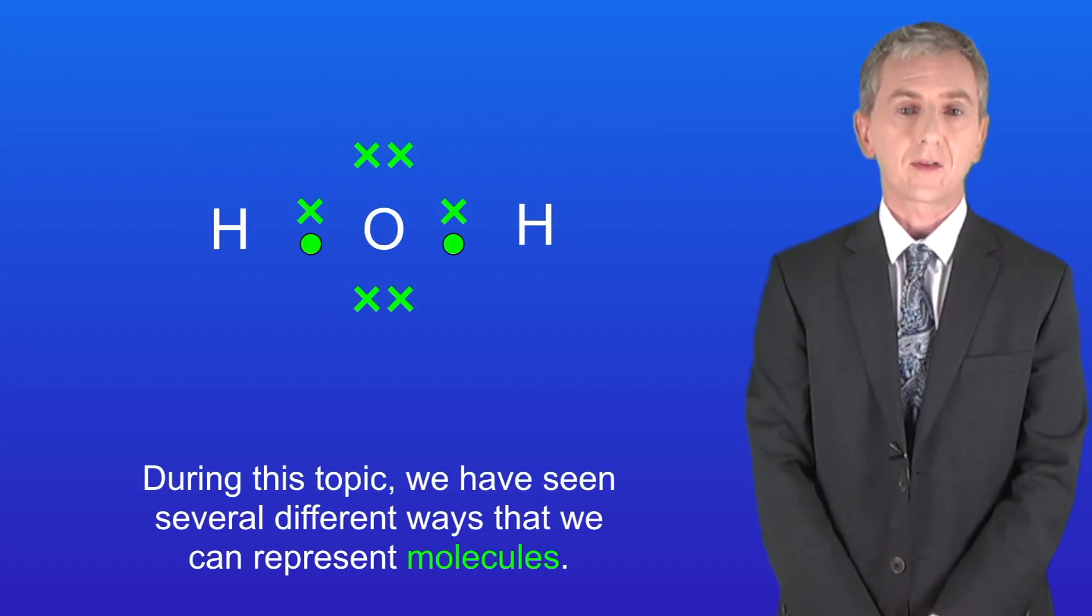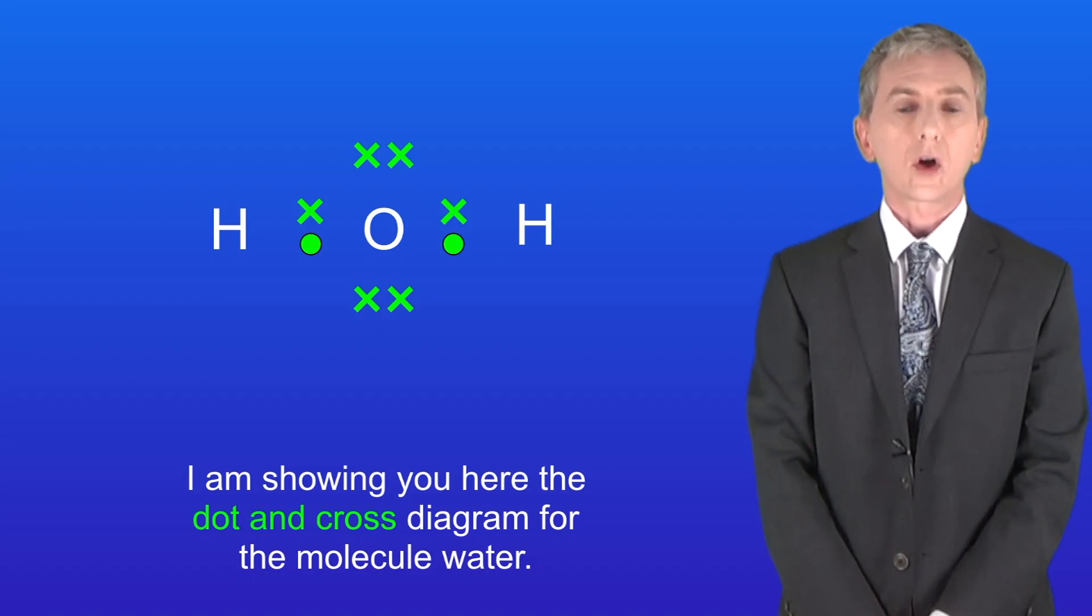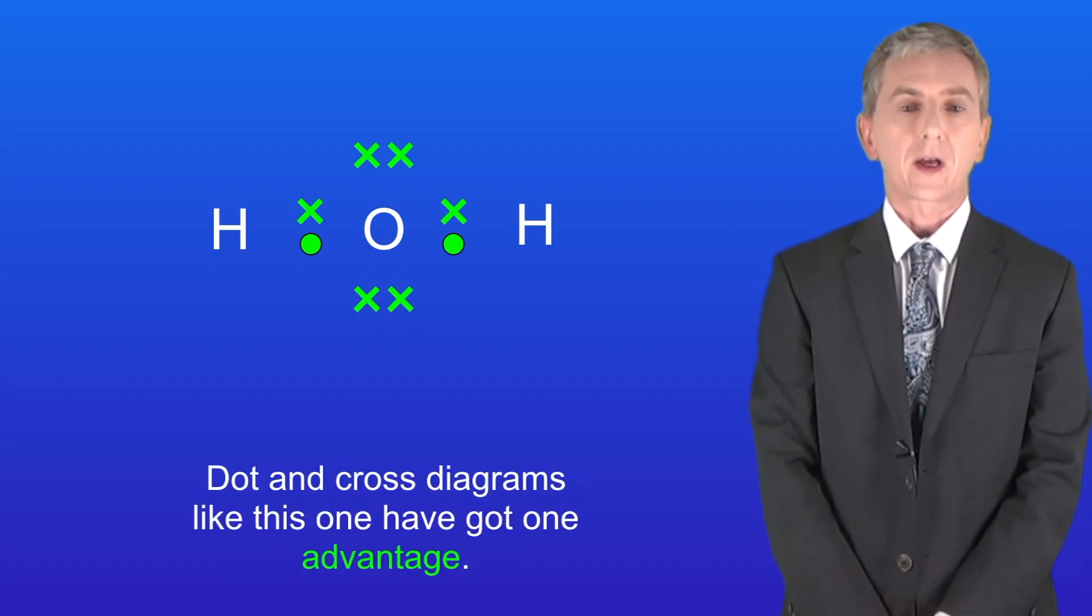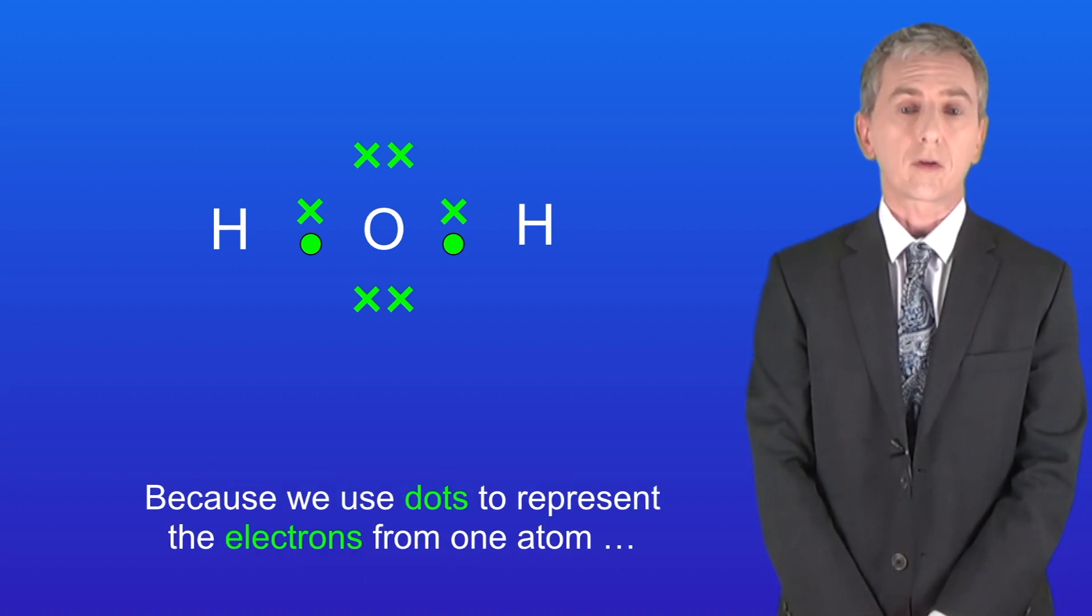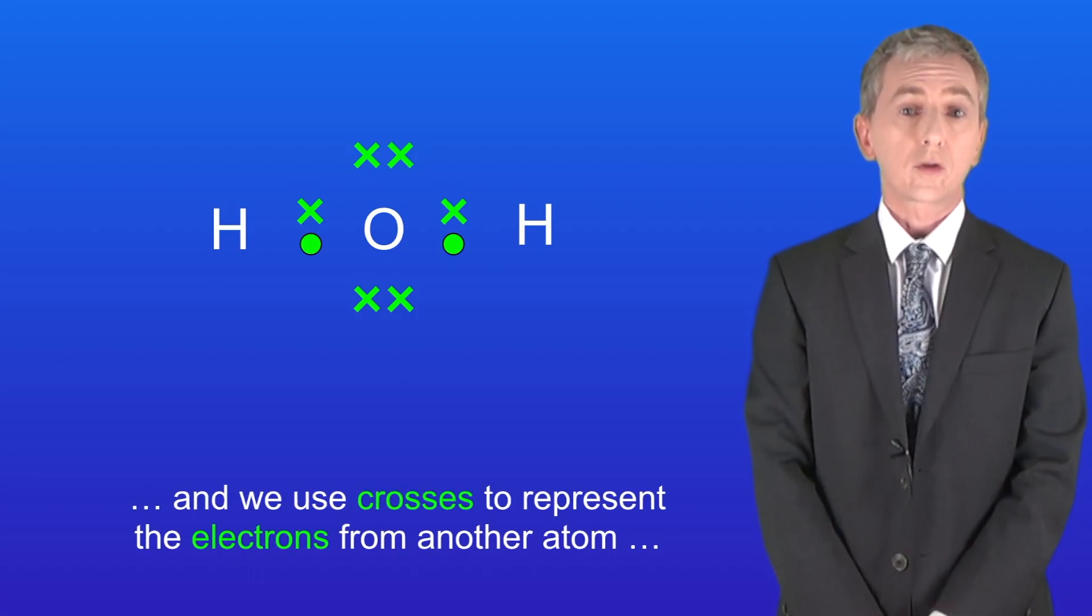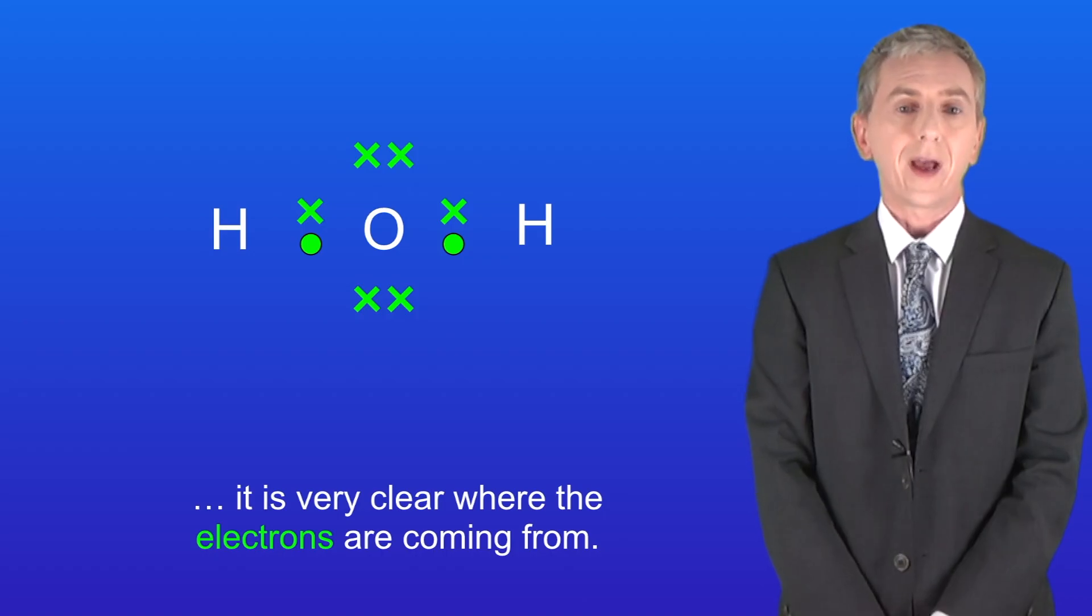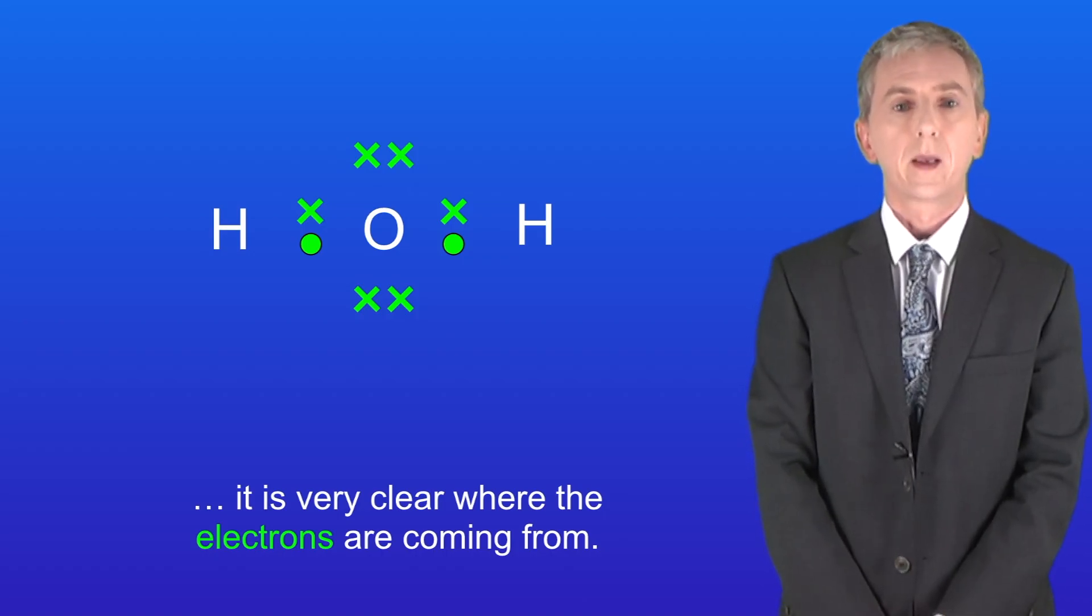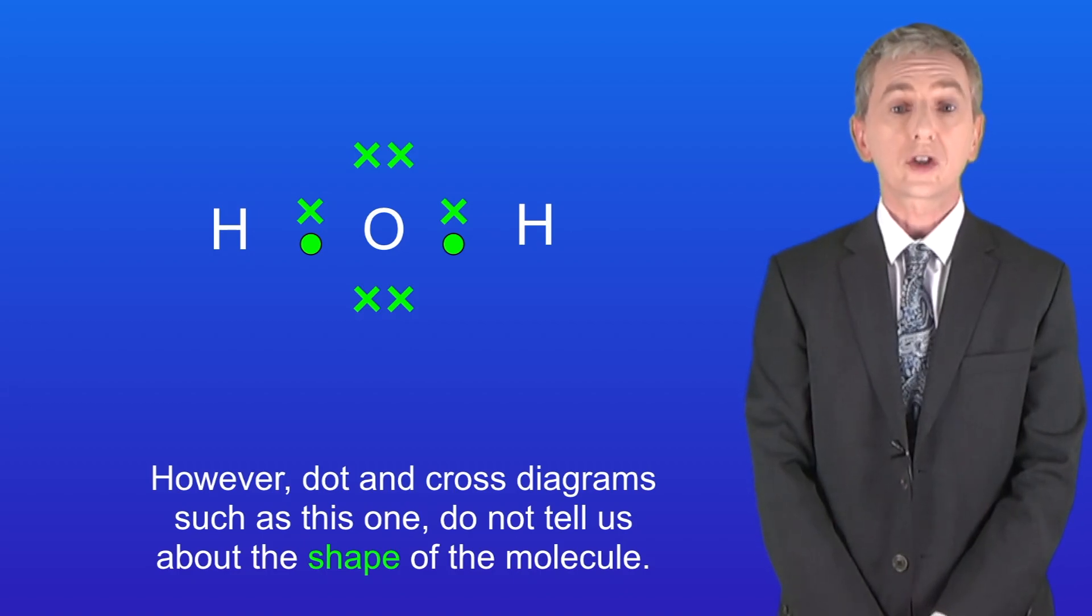During this topic we've seen several different ways that we can represent molecules. I'm showing you here the dot and cross diagram for the molecule of water. Dot and cross diagrams like this have one advantage. Because we use dots to represent the electrons from one atom and crosses to represent the electrons from another atom, it's very clear where the electrons are coming from. However, dot and cross diagrams don't tell us about the shape of the molecule.